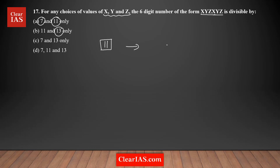To check whether xyzxyz is divisible by 11, you take the sum of the digits coming at the odd positions. Note: we are talking about odd positions, not odd numbers. The number has six digits, so the positions are first, second, third, fourth, fifth, and sixth.